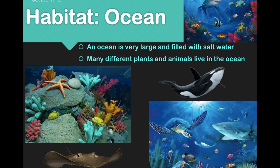An ocean is very large and filled with salt water. Many different kinds of plants and animals live in the ocean. Here we have some coral, a starfish, some sea turtles, a shark, a manta ray, some more fish and coral, and a stingray — my absolute favorite animal — the stingray.